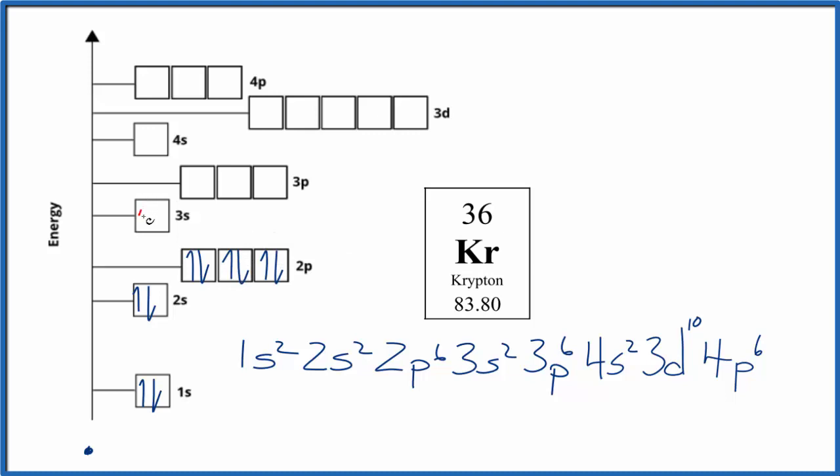3s2, 3p6, 4s2, then we get to the 3d10. Again, we spread them out first and then pair them up. We're left with 4p6, and now that's full.